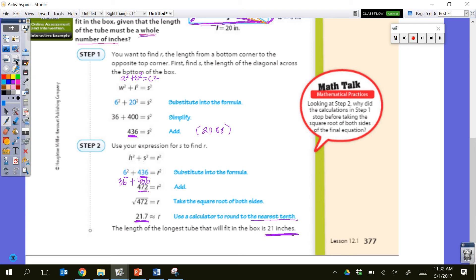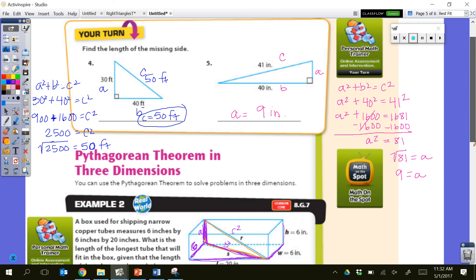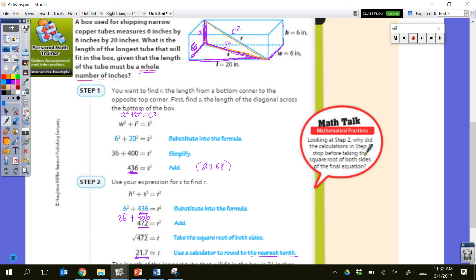So let's go ahead and do, oh, let's see what this math doc is asking us about here. Looking at step two, why did the calculations in step one stop before taking the square roots of both sides to the final equation? Okay, so that's what we talked about right here. We didn't find the square root because we knew that s squared was going to end up back in this equation anyways. So we would have had to find a square root, plug it back in, and then square it again. So we just kind of saved ourselves a step. So we can just stop at that expression for s squared, because it can be substituted right in there. It's a little, a few little steps.